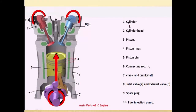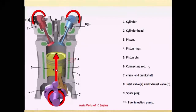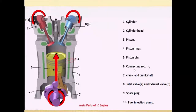Later on we will discuss each of these parts in brief. First part is the cylinder. Second is the cylinder head. Third is the piston. Fourth, piston rings — you can see grooves in the piston; these are nothing but piston rings. Piston pin — here you will see the piston pin. Connecting rod — this one is the connecting rod. Crank and crankshaft — you will see here crank as well as crankshaft.